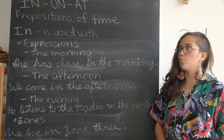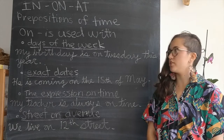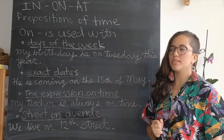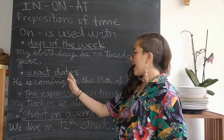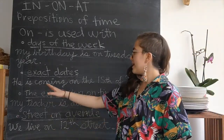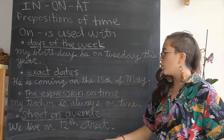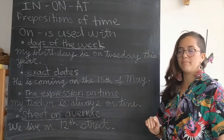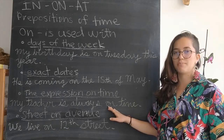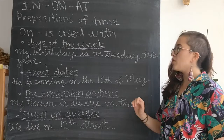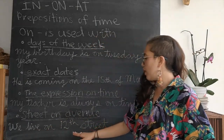Now let's look at the word on. The preposition of time on is used in the following expressions. With days of the week, so we would say my birthday is on Tuesday this year. With exact dates, so we would say he is coming on the 15th of May. With the expression on time, so my teacher is always on time. This means that they get there at the exact hour or exact time they are supposed to meet. We also use on to talk about a street or avenue, so we would say we live on 12th street.